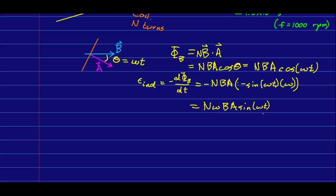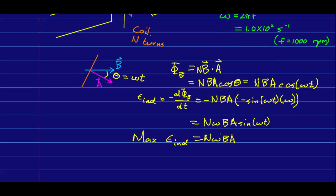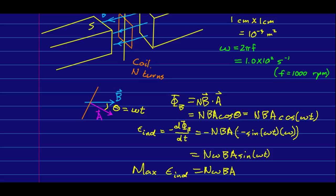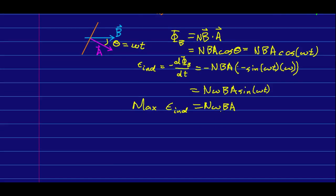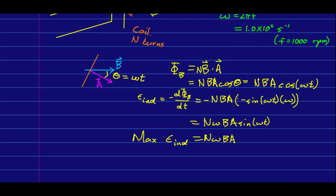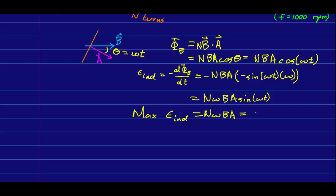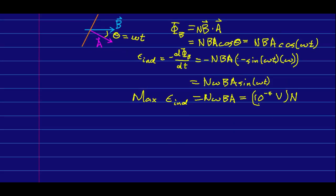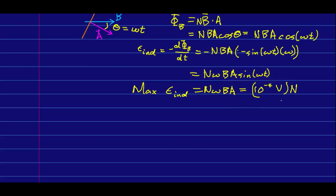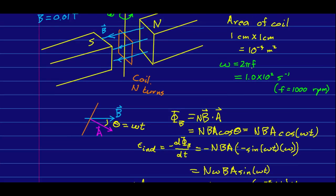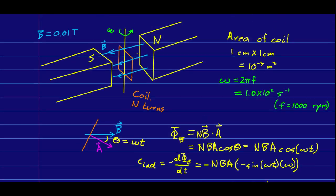We get a fluctuating sinusoidal EMF — this produces AC current. The maximum EMF occurs when the sine equals 1. With omega on the order of 10², area of 10⁻⁴ m², and B of 10⁻² Tesla, the overall EMF is 10⁻⁴ volts times N. So for a 0.1 volt EMF we need 1,000 turns. If we want a bigger EMF, we should either spin the coil faster, use a larger coil, or — more difficult — use a stronger B-field.